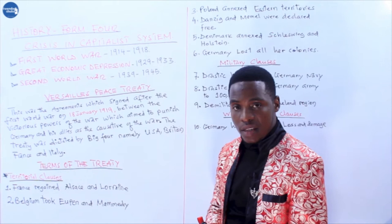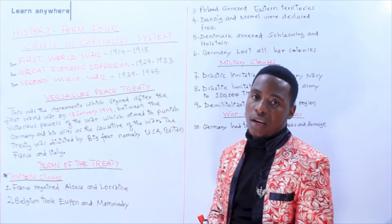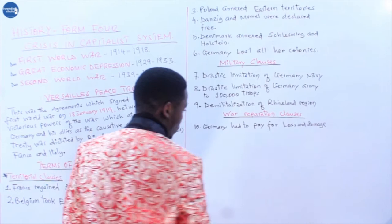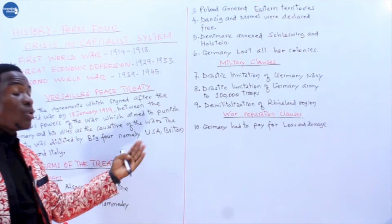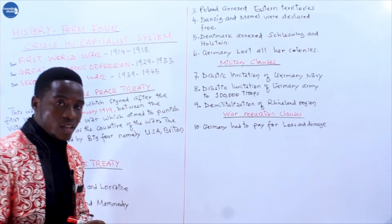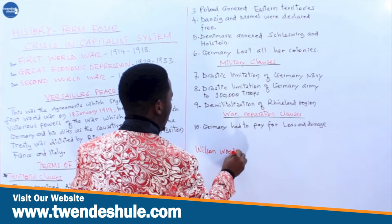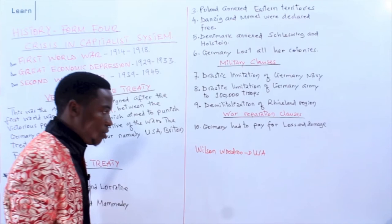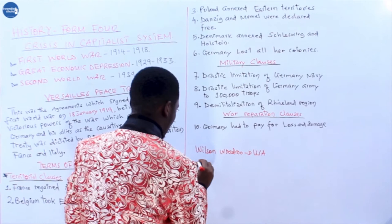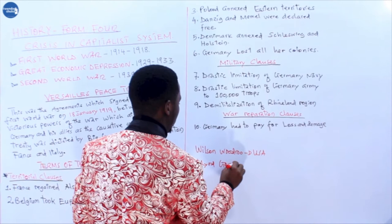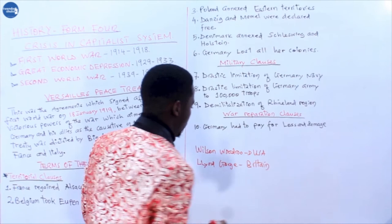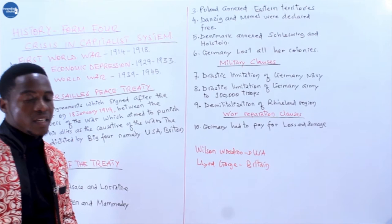Among these Big Four who dictated the Peace Treaty, they were represented either by a president, a prime minister, or an executive officer. For instance, on the side of USA, the one who chaired the Peace Treaty was the president of USA at that time, who was called Woodrow Wilson. Then Britain was represented by Lloyd George, who was the prime minister of Britain at that time.